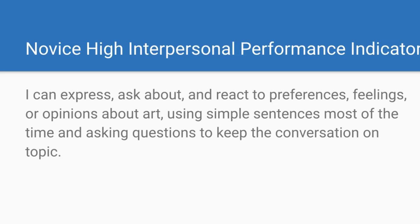Let's take a look together at the two levels. Here is the Novice High Interpersonal Performance Indicator from ACTFL: I can express, ask about, and react to preferences, feelings, or opinions about art, using simple sentences most of the time, and asking questions to keep the conversation on topic. That is where your students are at the beginning of the unit for the theme of talking about art.